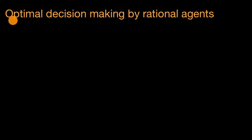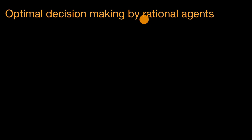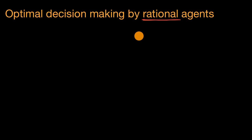What we're going to do in this video is think about optimal decision making by rational agents — how would someone with a lot of reasoning ability make optimal decisions? They would look at the costs and benefits of a decision and try to do the action that maximizes the difference between benefits and costs.